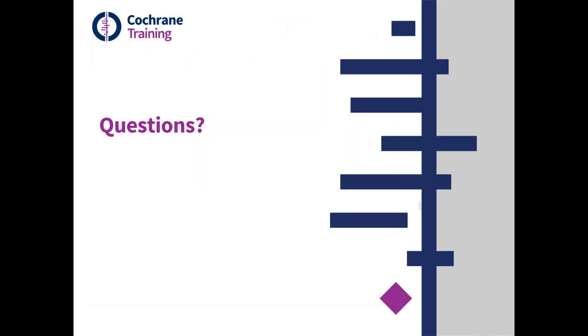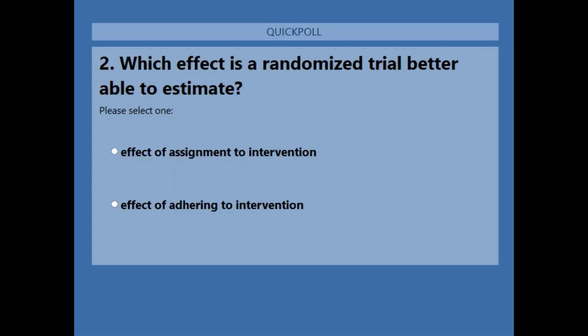Shall we ask a quick poll to check people's understanding of that? Poll number two, please. The question is: which effect is a randomized trial better able to estimate — the effect of assignment to intervention, or the effect of adhering to intervention?